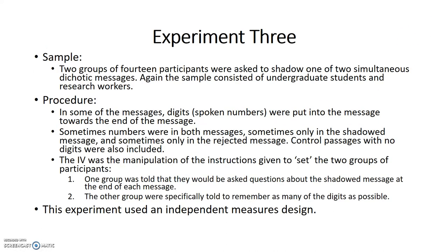In experiment three, the sample was two groups of 14 participants asked to shadow one of two simultaneous dichotic messages, again consisting of undergraduate students and research workers. In some of the messages, digits — spoken numbers — were put into the messages towards the end. Sometimes numbers were in both messages, sometimes only in the shadowed message, and sometimes only in the rejected message. Control passages with no digits were also included. The independent variable was the manipulation of instructions given to the two groups: one group was told they would be asked questions about the shadowed message, while the other was specifically told to remember as many of the digits as possible. This experiment used an independent measures design.